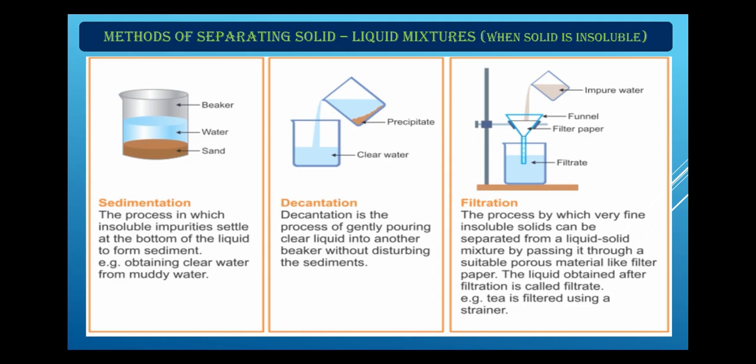For example, in a mixture of sand and water, the sand settles at the bottom after some time. The clear water on top is poured into another container — this process is called decantation. Sedimentation and decantation are also used at home while washing pulses with water, where the upper layer of water containing impurities is decanted.